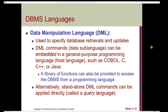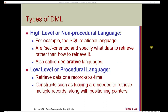Data manipulation languages like SQL are used to specify database retrievals and updates. DML commands can be embedded in a general-purpose programming language like COBOL, C, C++, or Java. A library of functions can also be provided to access the DBMS from a programming language. Alternatively, standalone DML commands can be applied directly in a query language. High-level or non-procedural DML languages, for example the SQL relational language, are set-oriented and specify what data to retrieve rather than how to retrieve it — these are also called declarative languages. Low-level or procedural DML languages retrieve data one record at a time, using constructs such as looping and positioning pointers.